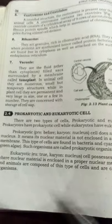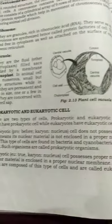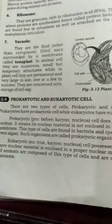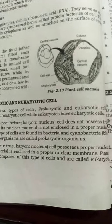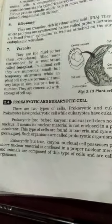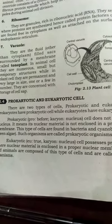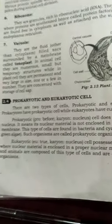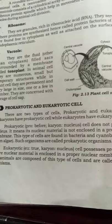Eukaryotic cells possess a proper nucleus where the nuclear material is enclosed in a proper nuclear membrane. This type of cells are called eukaryotic cells. Animals are examples of eukaryotic organisms.